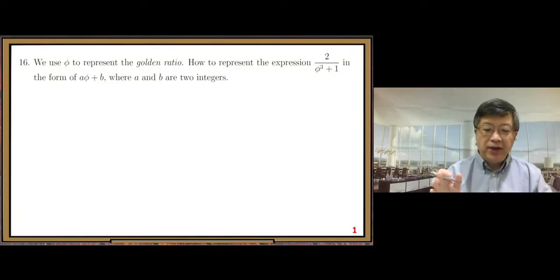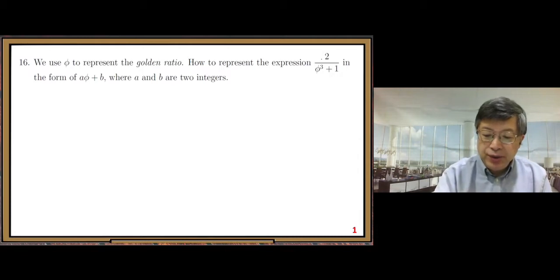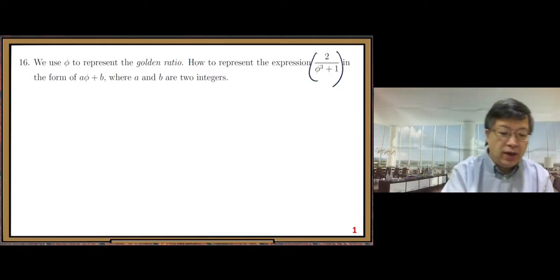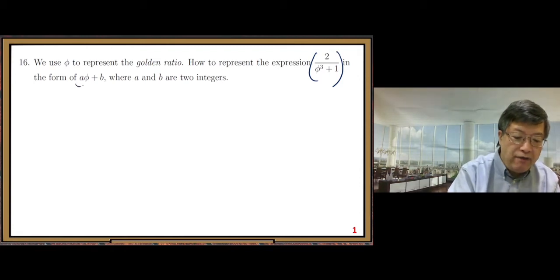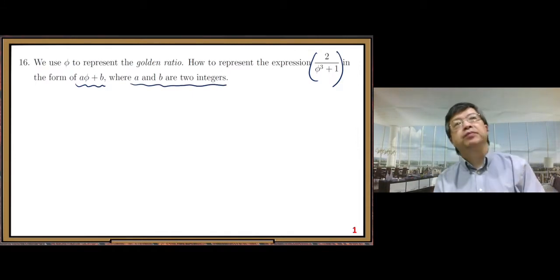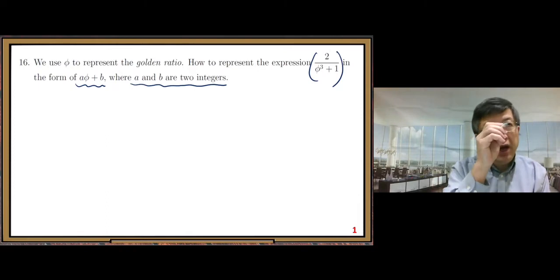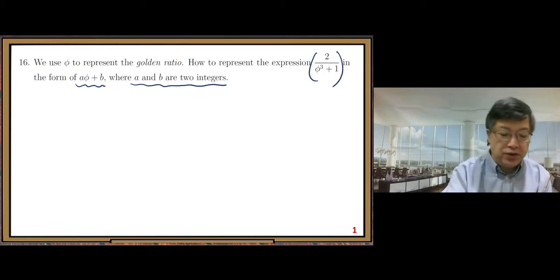Number 16. We need to write this expression 2 over φ cubed plus 1 in the form of aφ plus b, where a and b are two integers. Here, you have freedom to choose a integer and a b integer.